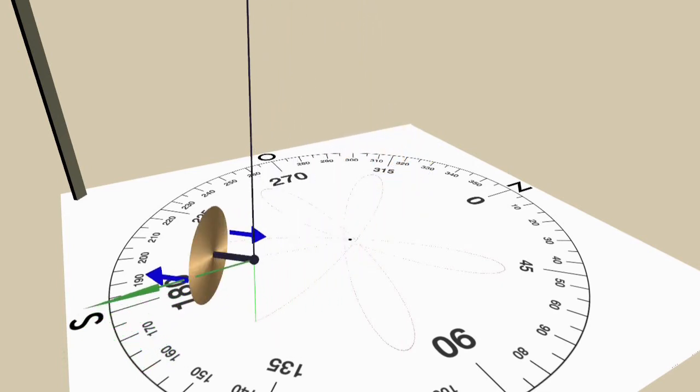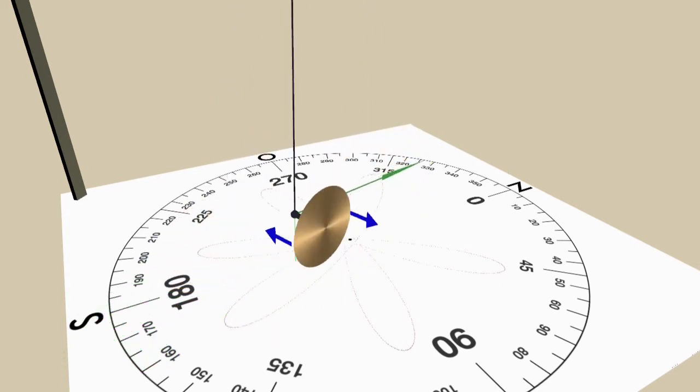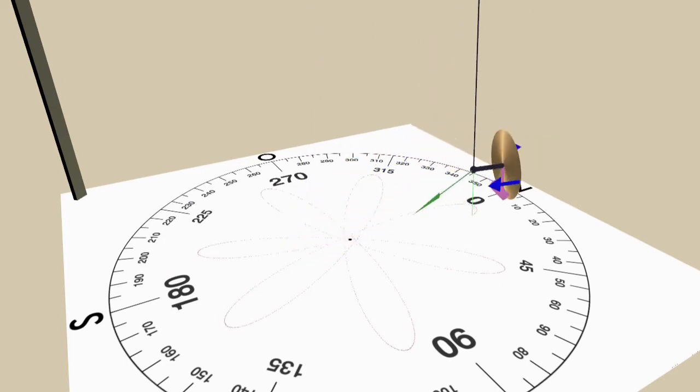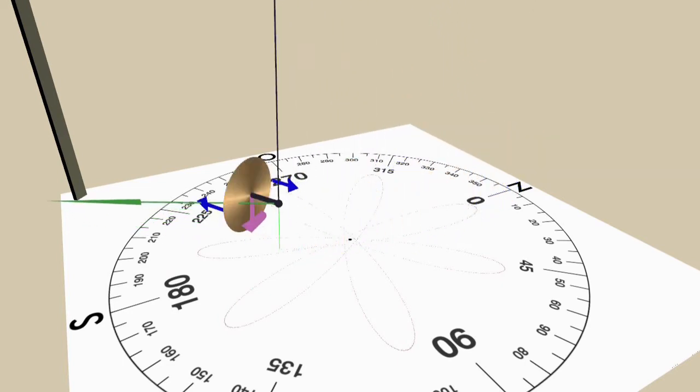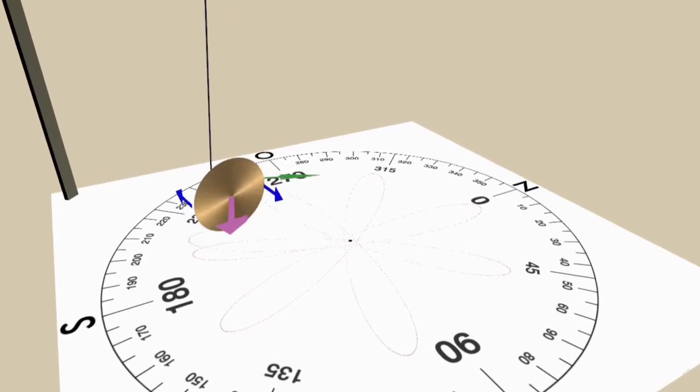The observed curved path corresponds to algebraic sums of velocity fields, whereby we observe a swinging pendulum in space, but not in a constant plane.